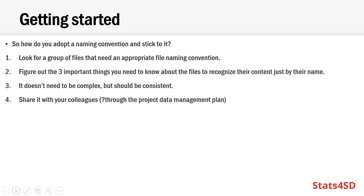So how can you get started on developing a naming convention? Number one: look for a group of files that you feel need an appropriate file naming convention. Within these files, scan through them and figure out the three most important things you need to know about the document in order to recognize its content. It shouldn't be complex, but it should be consistent. Whatever works for you is what you should go with. It's also important to share this naming convention with your colleagues through the data management plan or any other platform you use.